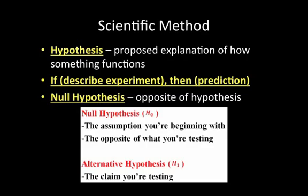There's also something called the null hypothesis, which is essentially the opposite of your hypothesis. So if my hypothesis is 'If I drop a book in the back of the classroom, then five people will jump,' my null hypothesis would be that five people will not jump — or fewer or more than five people jump. Either our hypothesis will be proved true, or our null hypothesis will be proved true. There's no other exception.